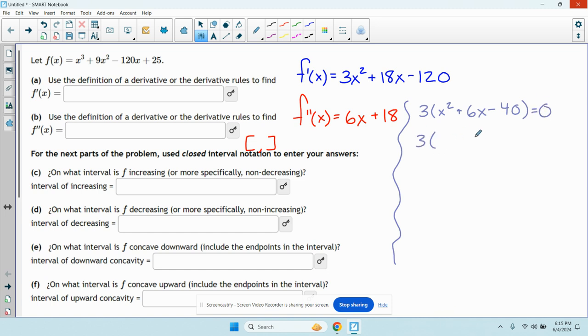So let's see, can we factor that? 3 multiplies to negative 40 adds up to 6. I think so. We have x plus 10 and x minus 4 multiplies to negative 40 adds up to 10. So if I solve this, I get x equals negative 10 or positive 4.